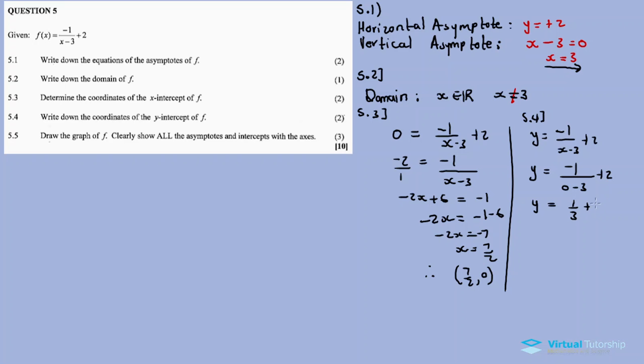Y equals 1 over 3 plus 2. It's 3 times 2 is 6, 6 plus 1 is 7, so we get 7 over 3.